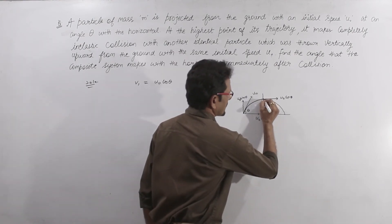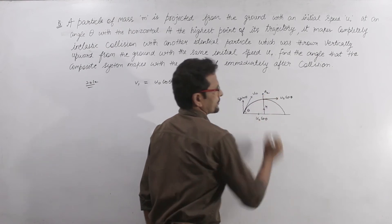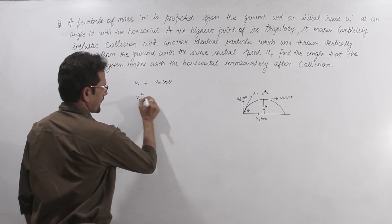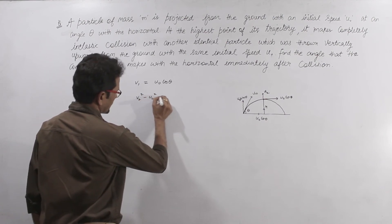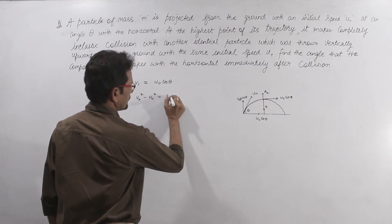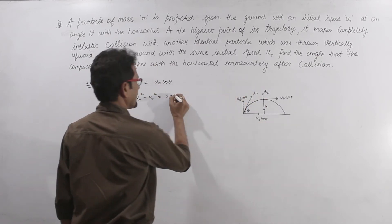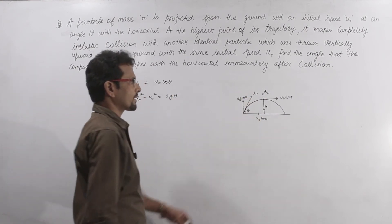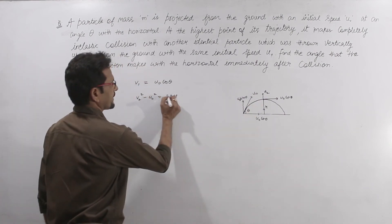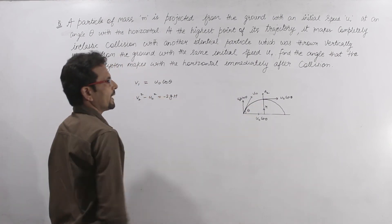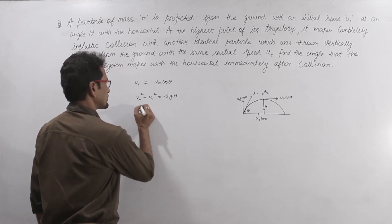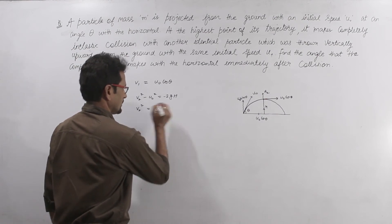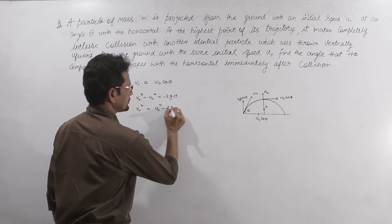So from the formula, v2 squared minus u0 squared equals 2gh. We take g as negative, so v2 squared equals u0 squared minus 2gh.